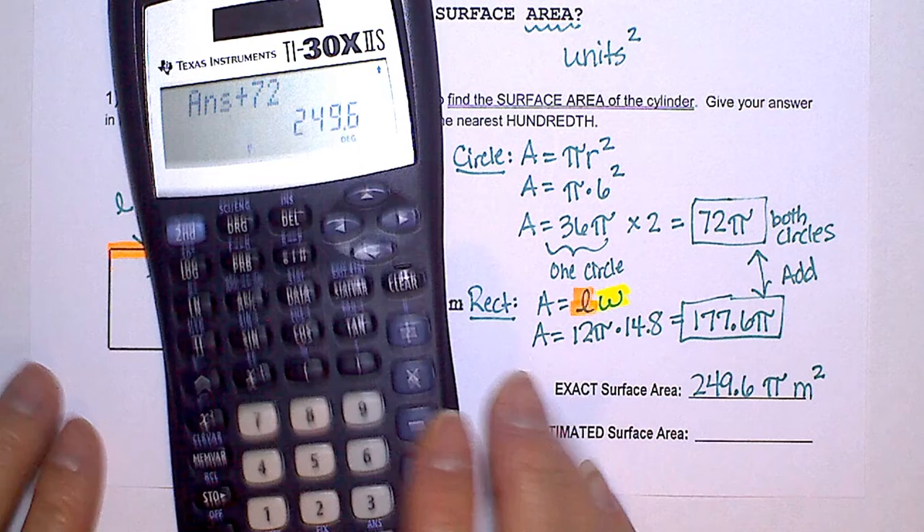So I add the numbers here, and we get 249.6 pi meters squared. Now, remember, the exact surface area is in terms of pi. But the estimated is when we take this answer, and we actually plug in the pi.